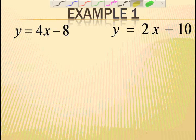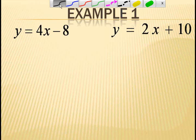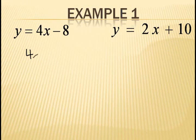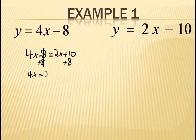Here's example 1: y equals 4x minus 8, and y equals 2x plus 10. First, you need to set the equations equal to each other, so your equation looks like 4x minus 8 equals 2x plus 10. Next, you add 8 to both sides and remember to cancel the 8 out on the left side, so the equation is 4x equals 2x plus 18.